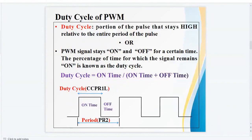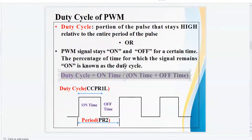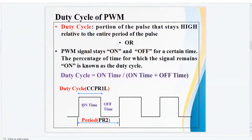Duty cycle of PWM definition: the portion of the pulse that stays high relative to the entire period of the pulse, or duty cycle, is the percentage of the time for which the signal remains on. Duty cycle equals on time upon on time plus off time. In the PWM signal, the on time is represented with the duty cycle and this is a complete period of the pulse.